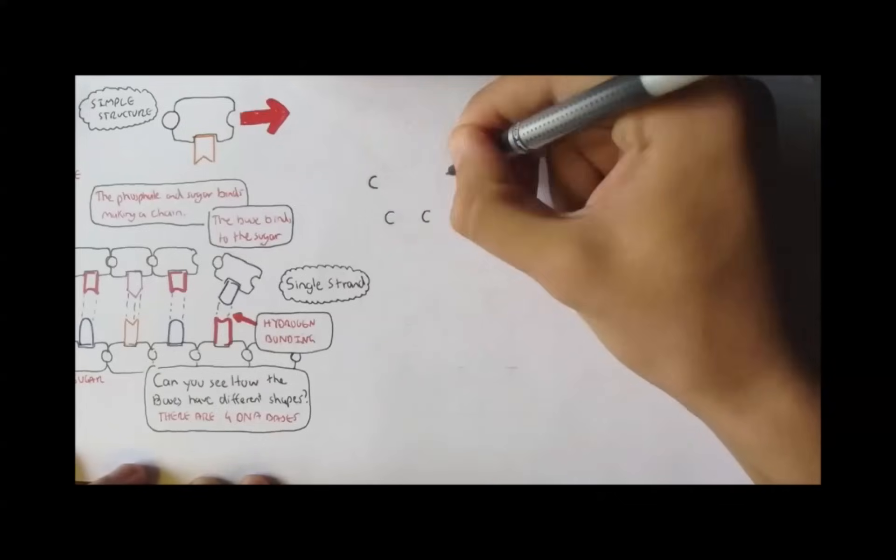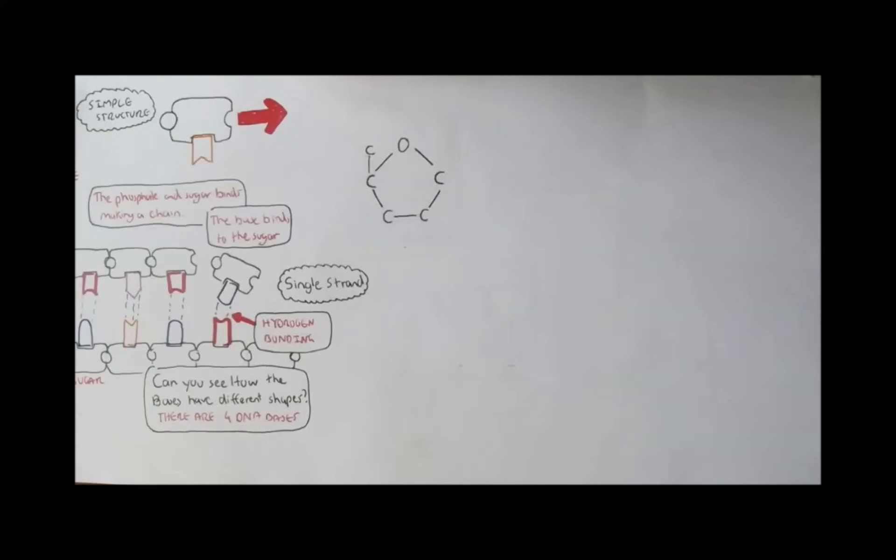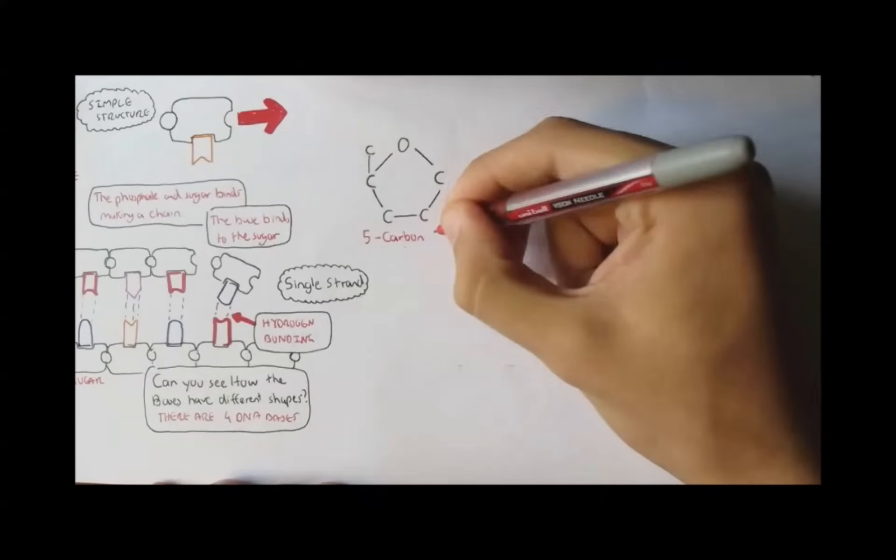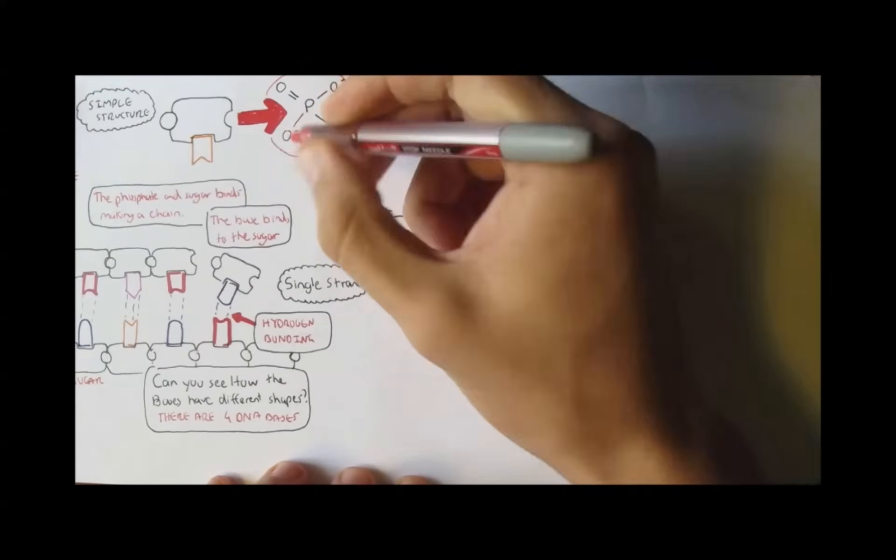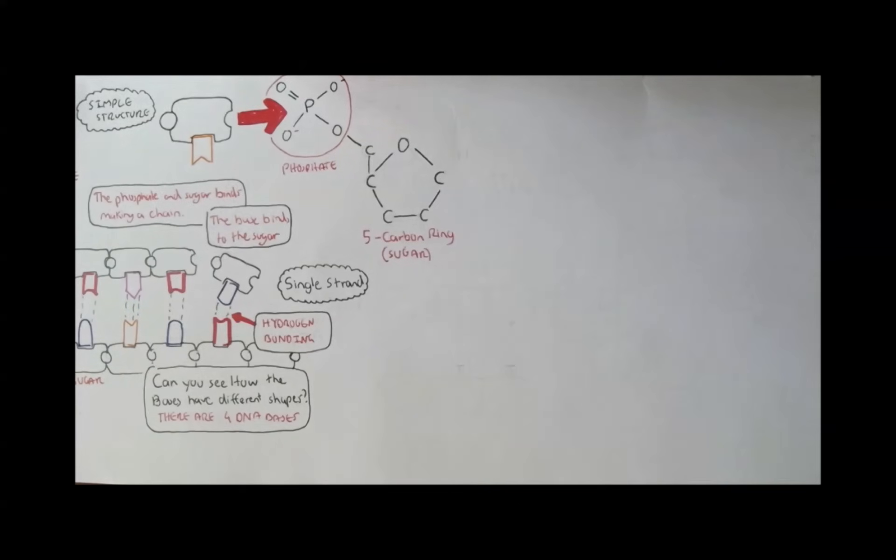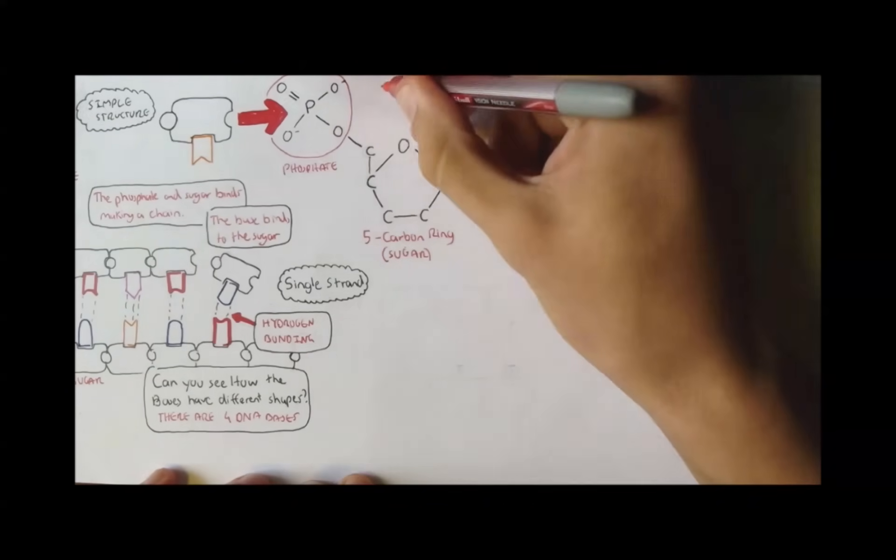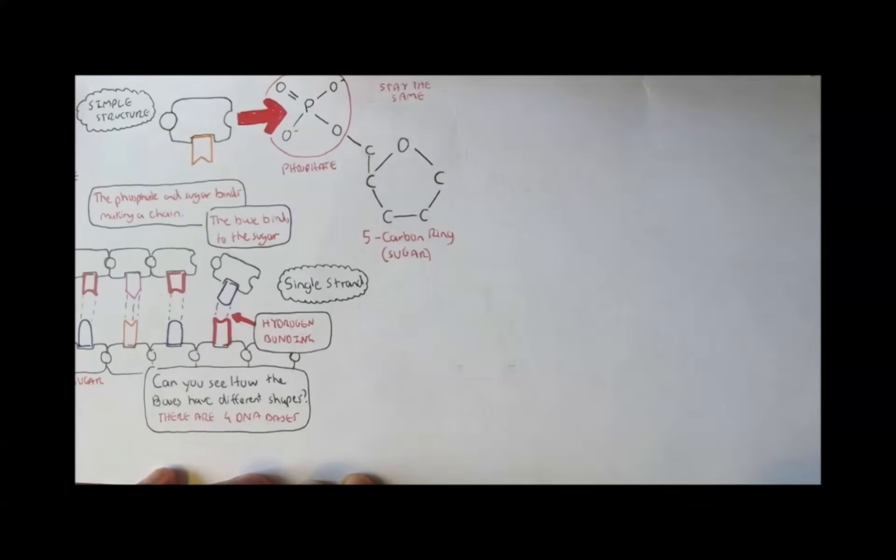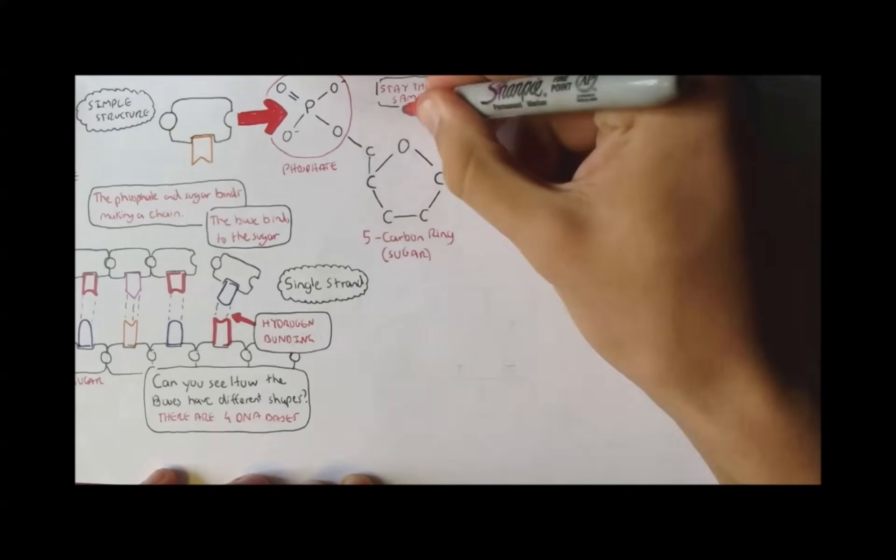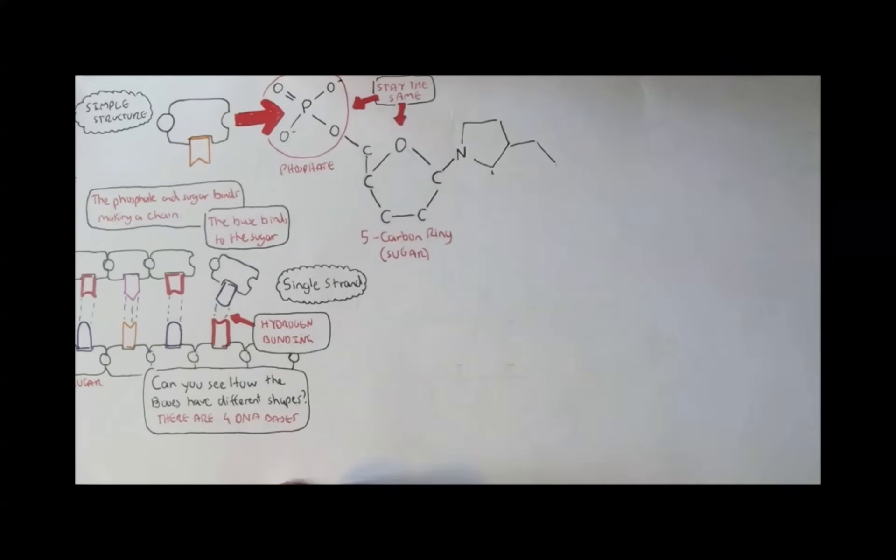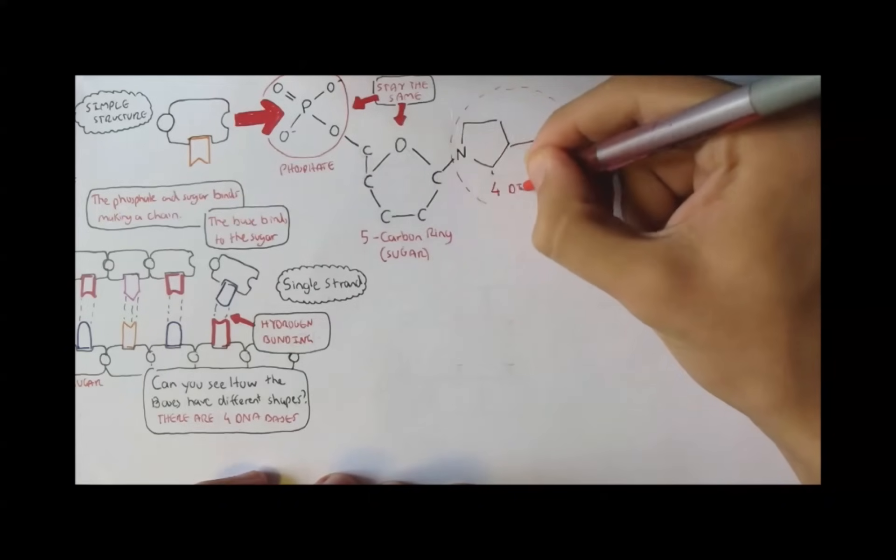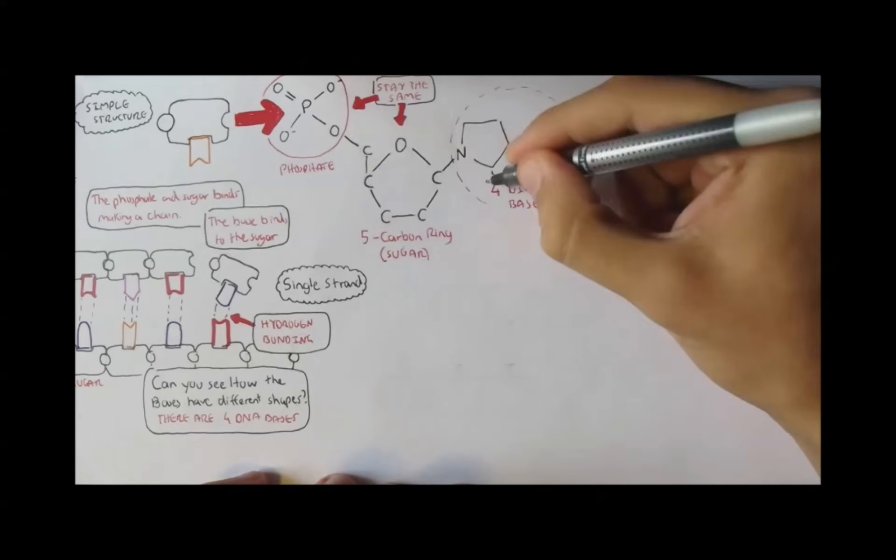The sugar is actually a five-carbon ring. It's a pentagonal shape, with the fifth carbon attached to the fourth carbon from the right. Now this fifth carbon is what attaches to the phosphate group shown here. The sugar and carbon groups are always the same on every nucleotide in our DNA. The base, there are four different bases. And they bind to the first carbon, so it can be any of the four bases.